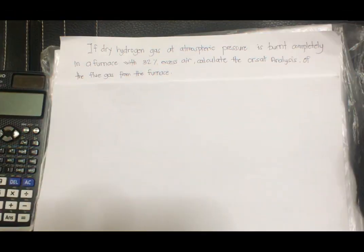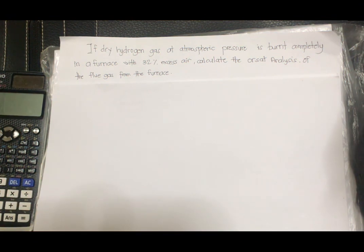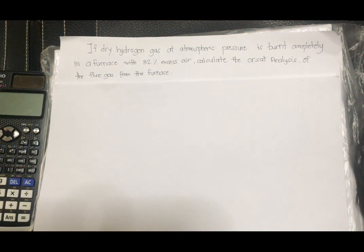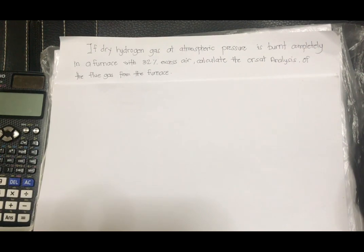So here's the problem: if dry hydrogen gas at atmospheric pressure is burned completely in a furnace with 32% excess air, calculate the Orsat analysis of the flue gas from the furnace.